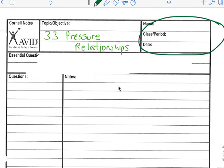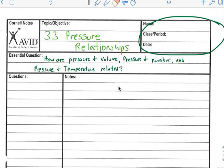Our objective is 3.3 pressure relationships and our essential question is how are pressure and volume, pressure and number, and pressure and temperature related? So we're going to talk about those three relationships.